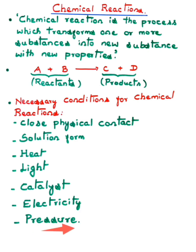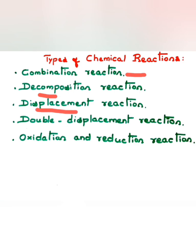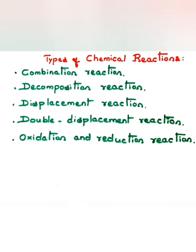These conditions may not all be asked in the exam, but it's good to know the basic concepts. Chemical reactions are broadly classified into the following types: combination reaction, decomposition reaction, displacement reaction, double displacement reaction, and oxidation and reduction reaction. We shall now learn about each one by one.